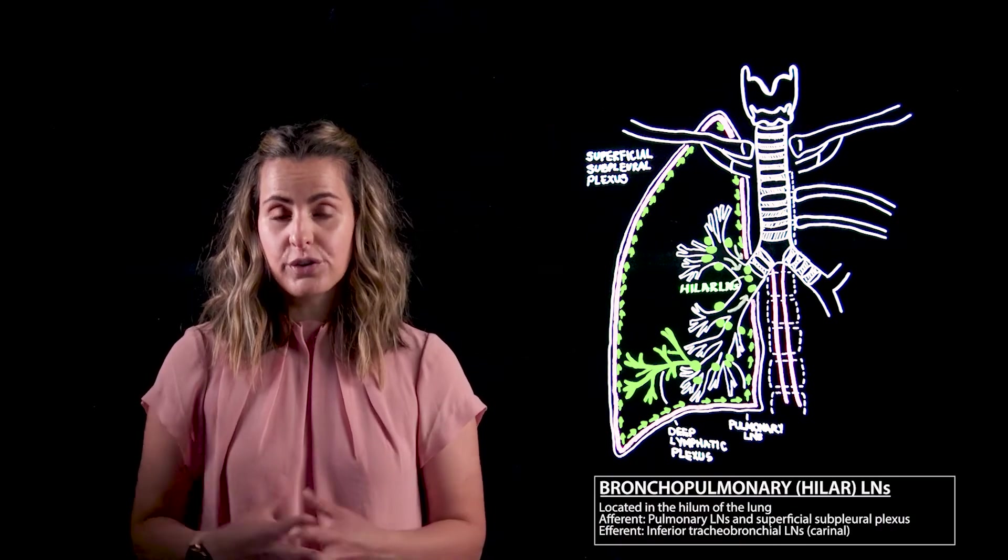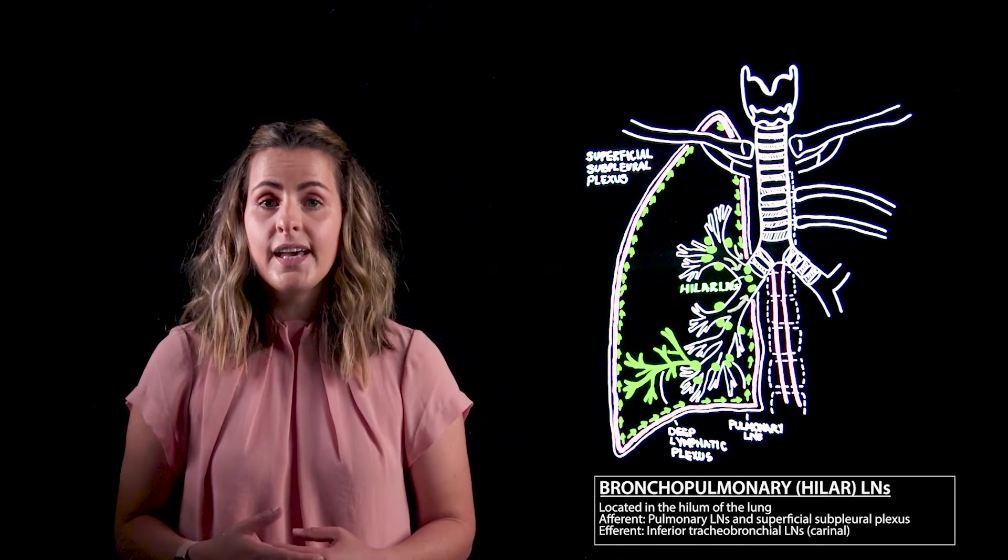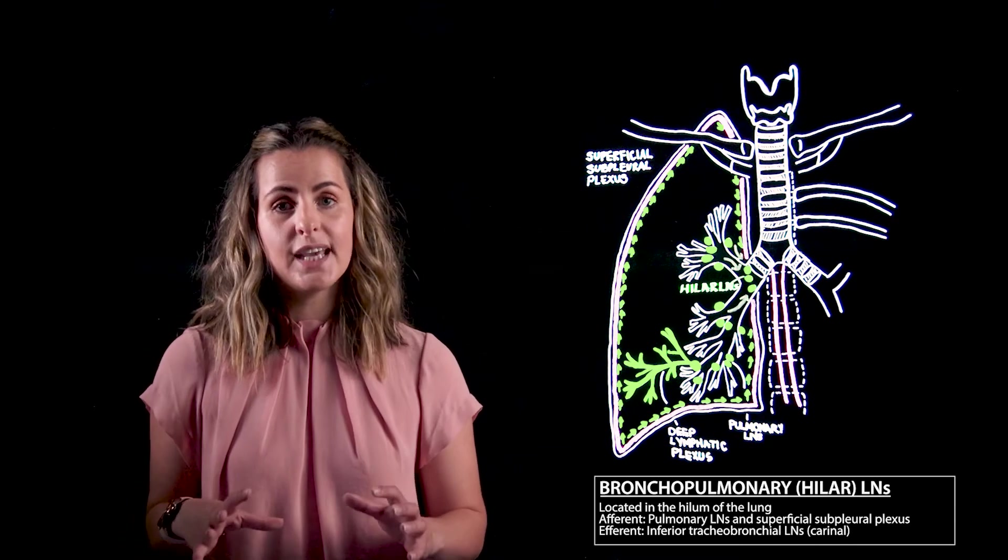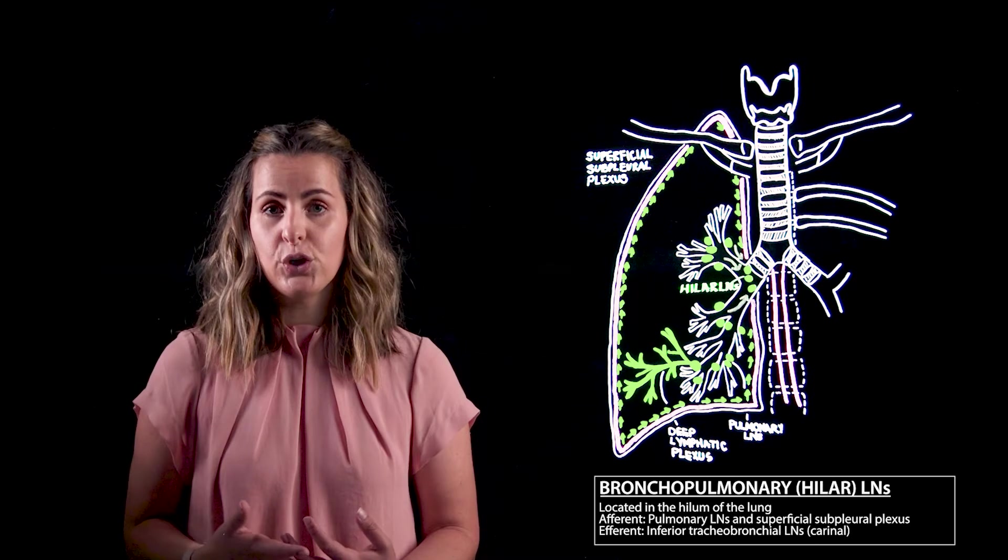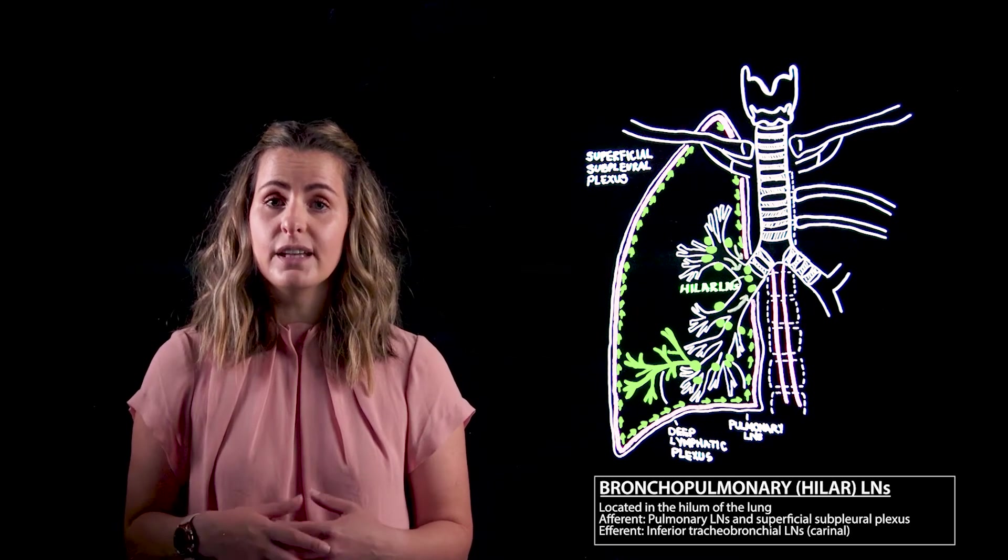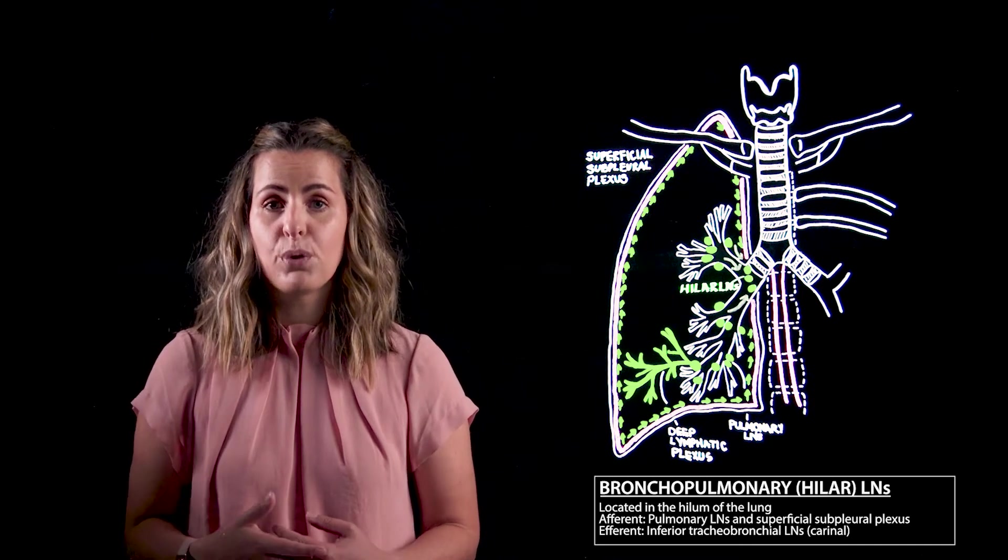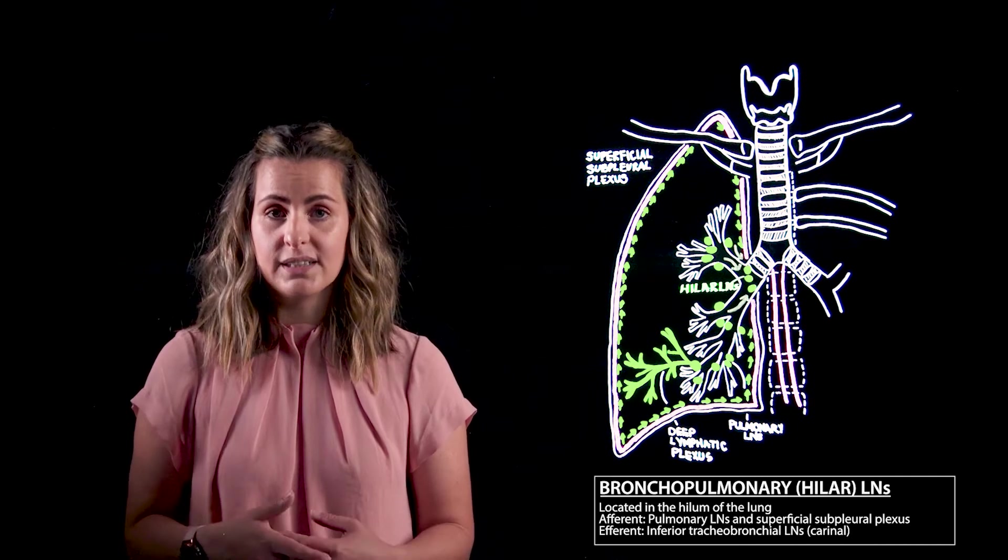The efferent drainage from the bronchopulmonary or hilar lymph nodes is going to be to the tracheobronchial nodes. As the name implies, the tracheobronchial nodes are located around the tracheal bifurcation at the level of the carina. These are going to be superior to the splitting into the main pulmonary bronchi and will receive all of the lymph from the lungs.